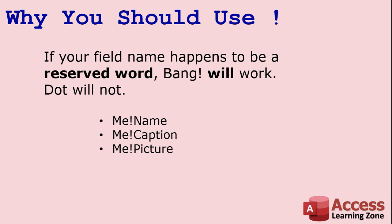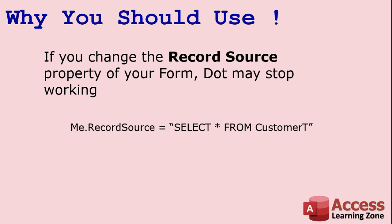Another reason dot may stop working is if you change the record source of your form — a VBA technique where you switch, for example, from CustomerT to ManagerT. You say me.RecordSource = something else. As soon as you change that and that field name no longer exists, Access doesn't recreate it as a property. So if your code references me.FirstName and FirstName is no longer in the record set, you'll get an error. That's a less common but still valid reason not to use dot.